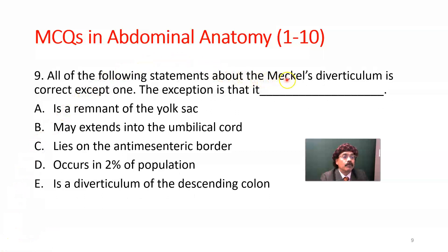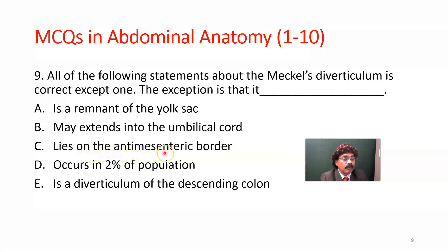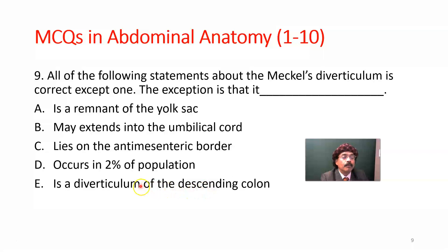Question number eight: All of the following statements about Meckel's diverticulum are correct except one. It is a remnant of the yolk sac — correct. It may extend into or connect to the umbilical cord — correct. It lies on the anti-mesenteric border — correct. It occurs in 2% of the population — correct, following the rule of two (2% population, two types of epithelium, within two feet of the ileocecal junction). However, the statement that it is a diverticulum of the descending colon is wrong — it is a diverticulum of the ileum, also called ileal diverticulum. This is the exception and the correct answer.